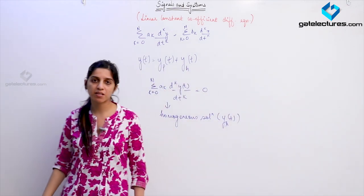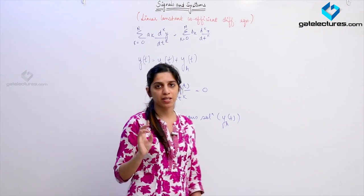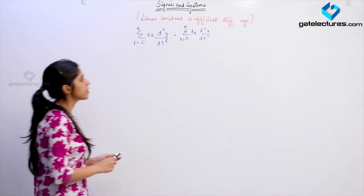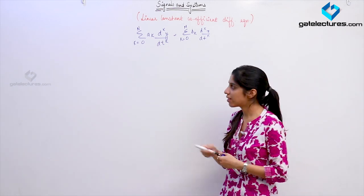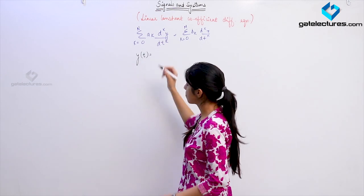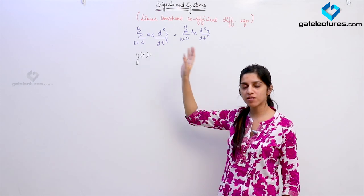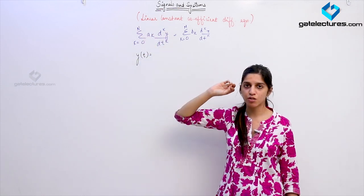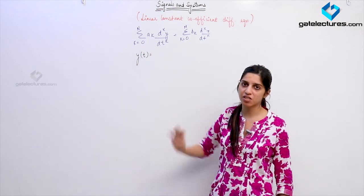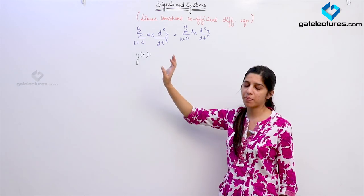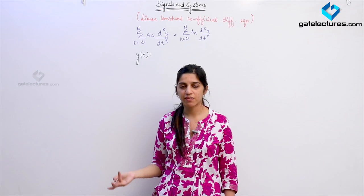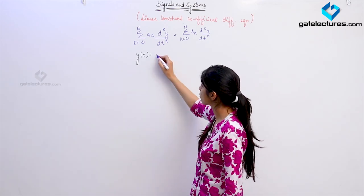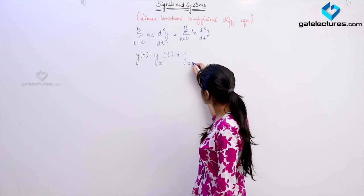In general, any solution of an LTI system is going to contain two parts: particular solution and homogeneous solution. Now, if the system is linear, we are going to obtain two outputs: one is the zero-state output and one is the zero-input response. If this equation represents a linear system, the response is given by the sum. The homogeneous response y_h is obtained by solving the LHS set equal to zero, found by solving N auxiliary conditions.